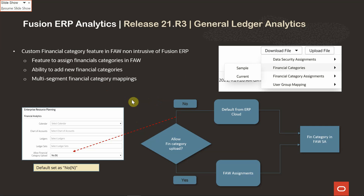In order to use this feature, you will need to update the allow financial category upload attribute in the reporting config of ERP to yes. The default value for this is no, but if you would like to update the financial categories in FAW instead of ERP Cloud, you should set this to yes. Once you set this to yes, you will be able to upload your financial categories mapping and assignments in FAW. This mapping will be used in the GL balance sheet and GL profitability subject areas for all of the metrics available there.